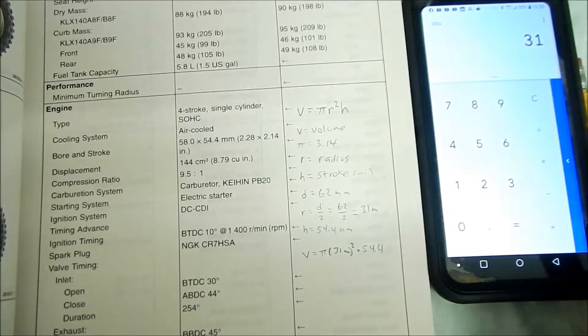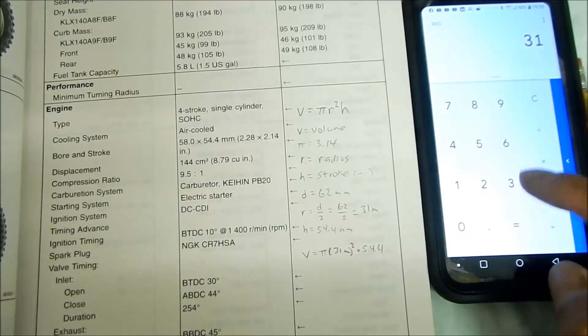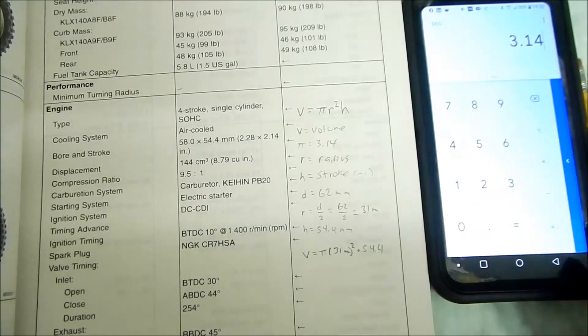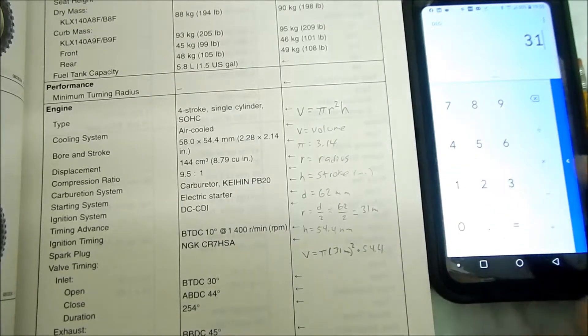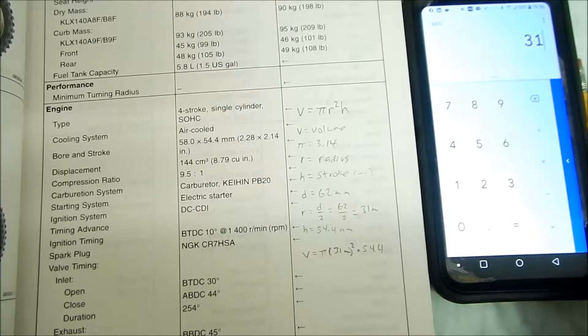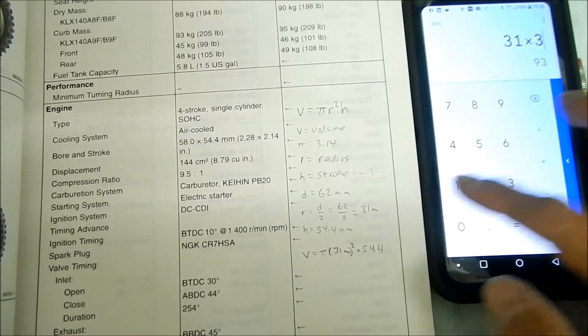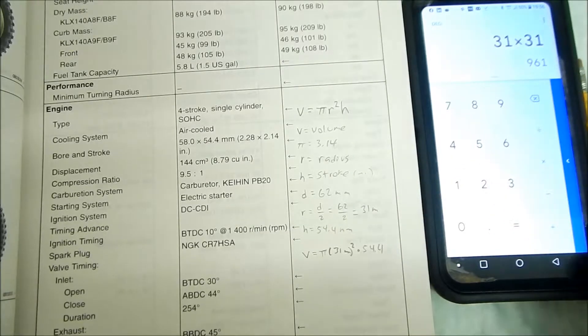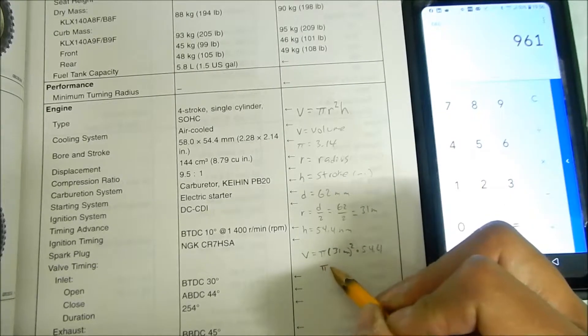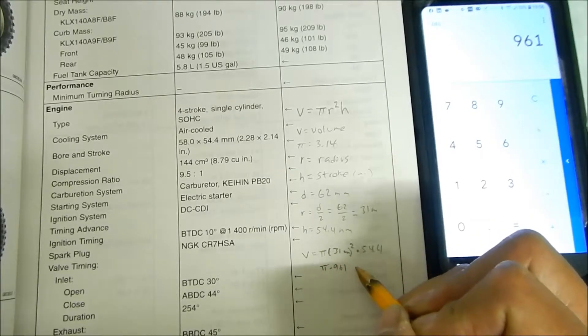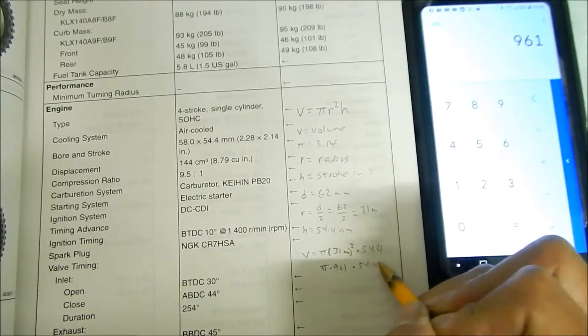Okay, so we're going to plug that all into the calculator. So pi is 3.14, actually let's do the stuff in the parentheses first. So 31 millimeters times 31 millimeters is r squared, that's 961. So pi times 961 times 54.4.